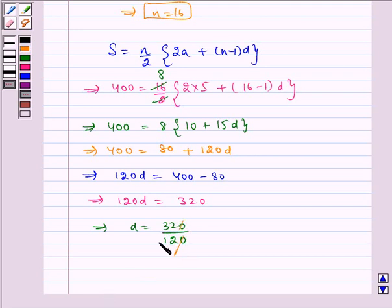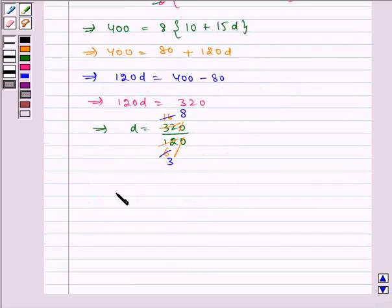Which implies D is equal to 320 by 120. The zeros get cancelled, this gets cancelled by 2, so we get here 6 and we get here 16. Cancelling by 2 again, we get 3 and 8, which implies D is equal to 8 by 3.